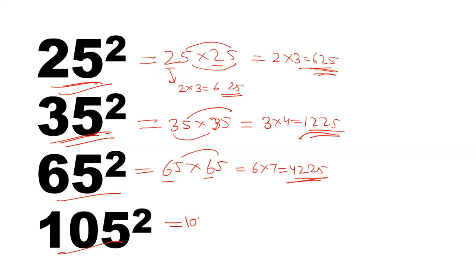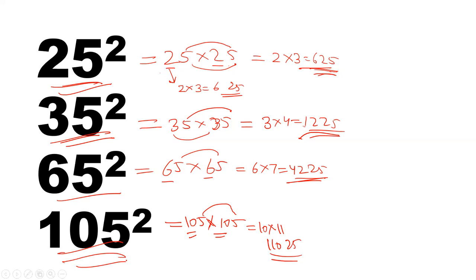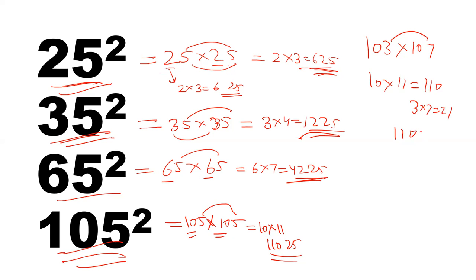We can also apply this method to three-digit numbers. For 105 squared: here 10 and 10 are the same at the tens place, and the unit digit sum is 5 plus 5 equals 10. Treating 10 as a single unit, multiply 10 by 11 to get 110, and 5 by 5 is 25, giving 11025. Similarly, for 103 into 107: 10 into 11 is 110, and 3 into 7 is 21, so the answer is 11021.